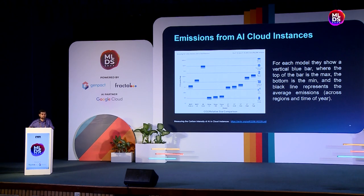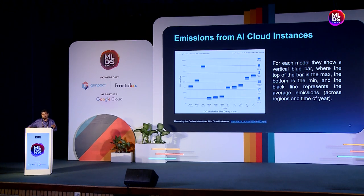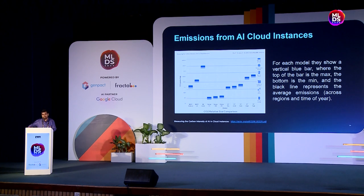This graph shows emissions from AI cloud instances — when you build models and deploy them on AI cloud instances, this is the emission profile that has been published. At the top you see models which consume energy equivalent to American homes' energy consumption — that is the scale at which energy consumption is happening. It is not that we should compromise to save energy or compromise with outputs, but we need to have in our conscious mind that we should always focus on how we can do AI sustainably.